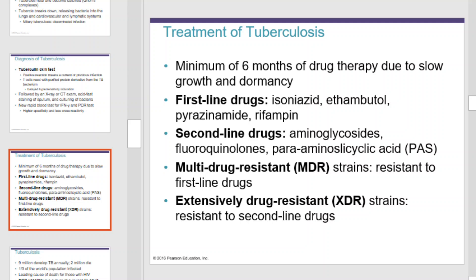To treat tuberculosis, a patient will experience a minimum of six months of drug therapy due to the slow growth and dormancy of the organism. The first-line drugs are isoniazid. Second-line drugs are aminoglycosides. Multi-drug-resistant (MDR) strains of tuberculosis are resistant to the first-line drugs. Extensively drug-resistant (XDR) strains are resistant to the second-line drugs.